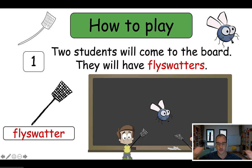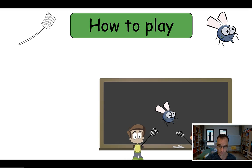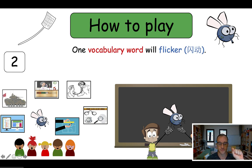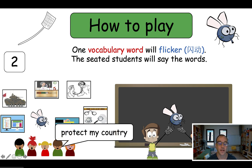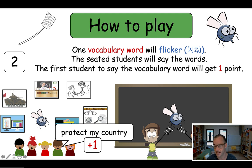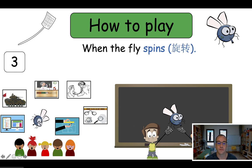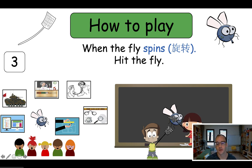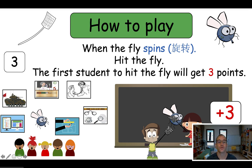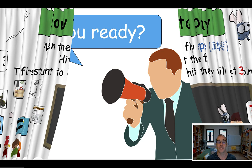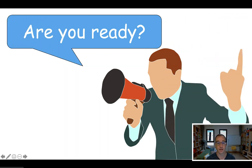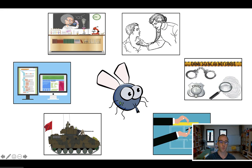So two students will come to the board — they'll have fly swatters. One vocabulary word will flicker. The seated students will say the words — the first student to say the vocabulary word will get one point, so you can emphasize that everyone is playing. When the fly spins, hit the fly — the first student to hit the fly will get three points. The students are going to absolutely love this game. It's super exciting and a great way to get them all to say the vocabulary words. Once one of the flashcards flickers, the first person who's seated to say it gets points.